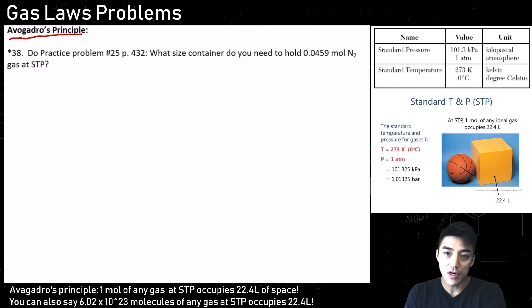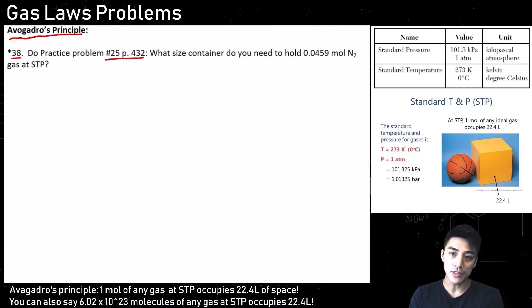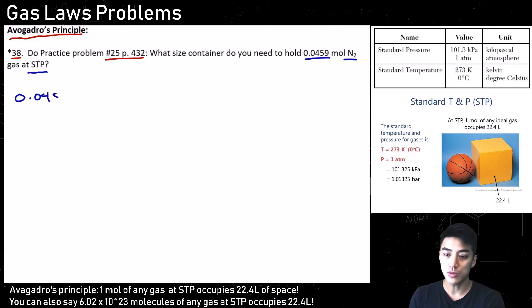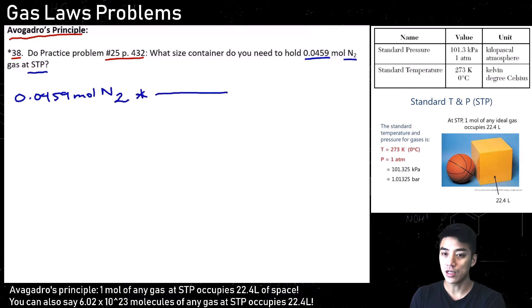Now that you understand Avogadro's principle, we can do number 38 — page 432, number 25 in the textbook. What size container do you need to hold 0.0459 moles of nitrogen gas at STP? The clue is STP. We know 1 mole of any gas occupies 22.4 liters, but we don't have 1 mole — we have 0.0459 moles. So we expect the answer to be less than 22.4.